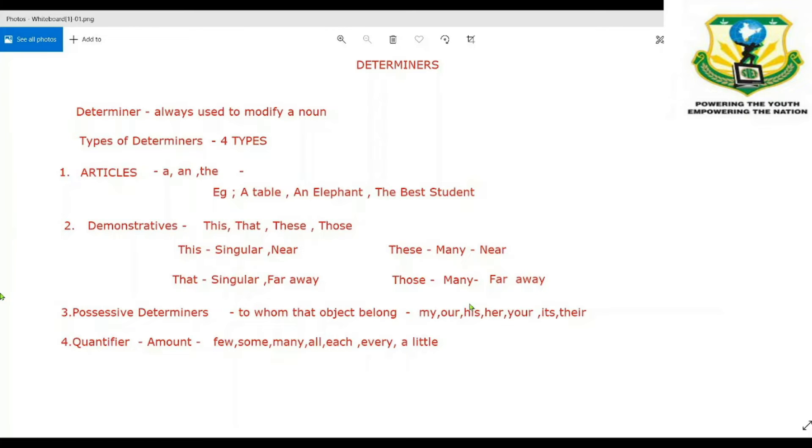The number two type of determiners is demonstrative. These demonstratives are of four types: this, that, these, and those.